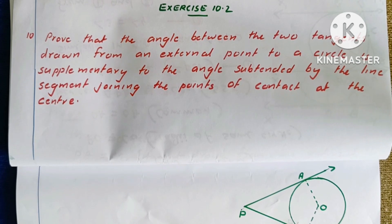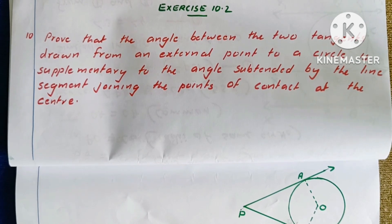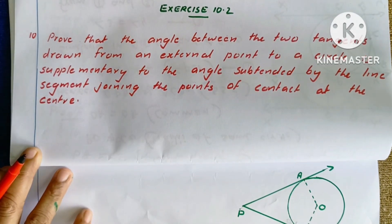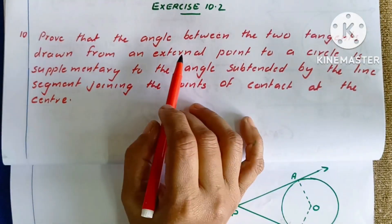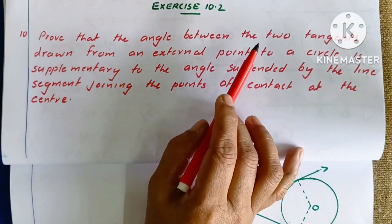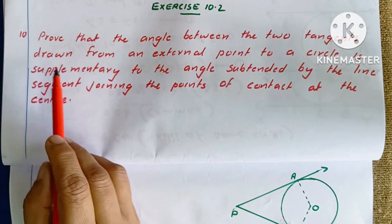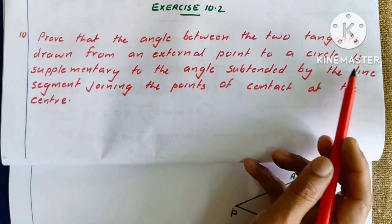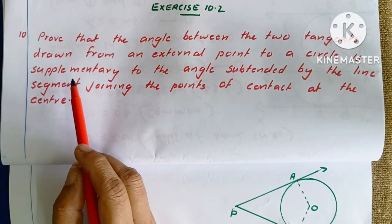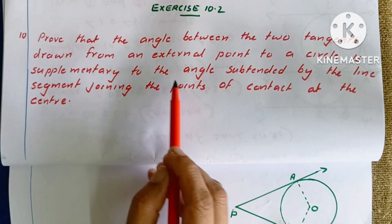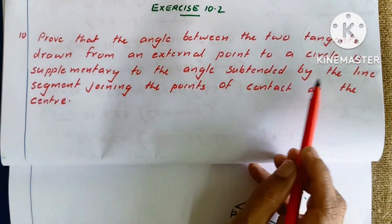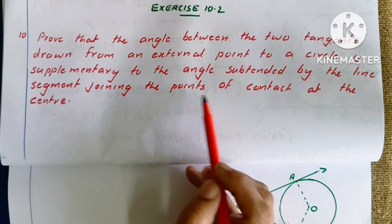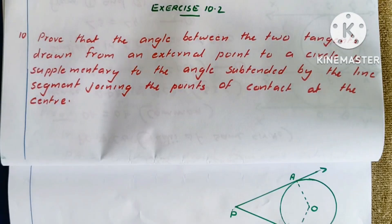Question 10.2: Prove that the angle between the two tangents drawn from an external point to a circle is supplementary to the angle subtended by the line segment joining the points of contact at the centre.